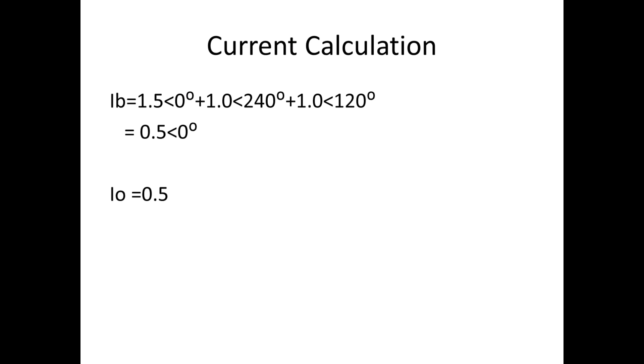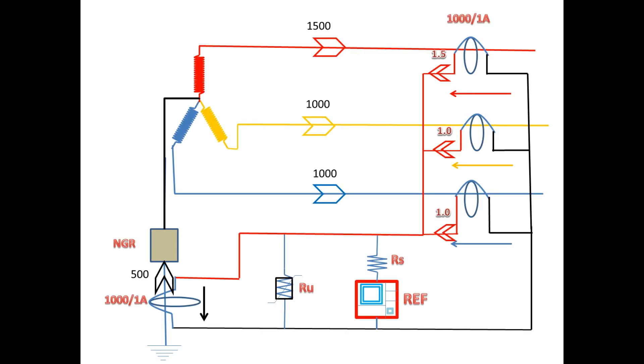For I0, the current is 0.5 amps. If we see both currents I0 and IB, they have equal magnitude and the same angle. So the current flows outward and will not enter the REF relay. The RS resistor is also one reason. In this case, the relay will read 0 amps so it will not trip.